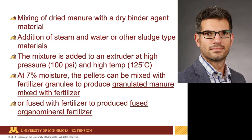After mixing, the material goes into an extruder at very high pressure — for example, 100 psi — and very high temperature, over 125°C. This helps mix everything well and also starts drying the manure. Once it reaches 7% moisture content, you can produce pellets, or you can fuse that dried mixture with a chemical fertilizer to produce a fused organic mineral fertilizer.